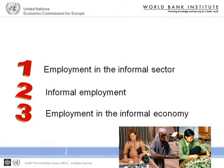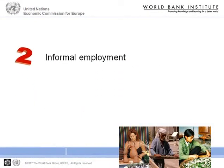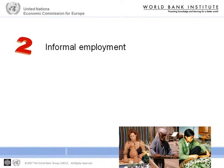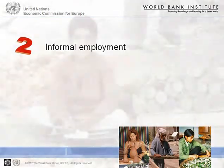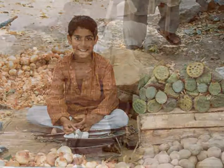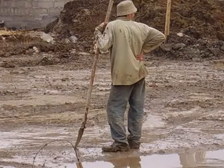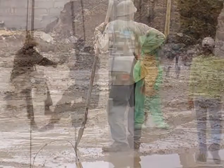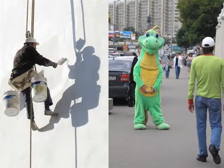The definition of informal sector did not capture all aspects of the increasing informalization of employment, which had led to a rise in various forms of informal, non-standard, atypical, alternative, irregular, precarious, and unprotected employment. The new concept of informal employment was introduced precisely to capture such aspects, and in many countries is more relevant than that of the informal sector. The concept was approved by the 17th International Conference of Labor Statisticians in 2003. It is a broader concept based on the type of job rather than the enterprise in which a person is employed.